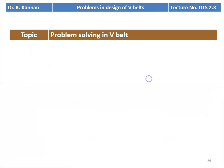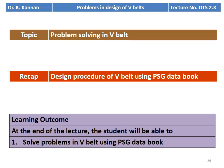This is lecture number 2.3. We are going to solve a few problems on the design of V-belt. In the earlier two lectures, we discussed the design procedure for V-belt using the PSG data book, and we solved three problems. In this lecture also, we continue with problem solving — three more problems from the Anna University question paper.